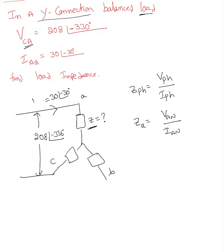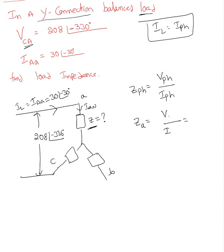He gave us IAA, which is the line current. In Y-connection, you need to remember: line current equals phase current. So this must be IAN. I already have IAN. So VAN over IAN — IAN must be the same as 30 at an angle of minus 30 degrees. The given value and required value are the same. Now I need to find VAN.